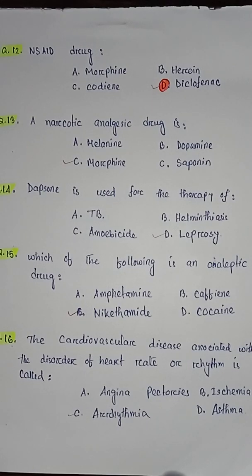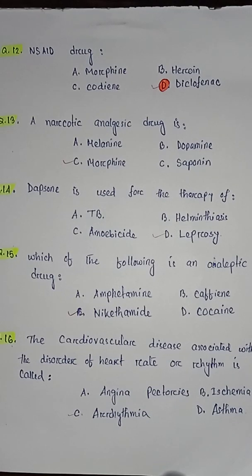Question number thirteen: a narcotic analgesic drug is — option A melanin, option B dopamine, option C morphine, option D saponin. So the correct answer is option C morphine.